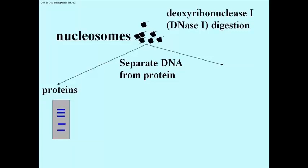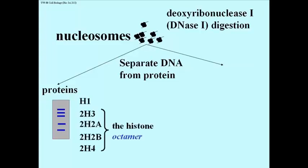It turns out that there are dozens of different proteins at this point. The 10 nm filament is really just made up of DNA and 5 proteins. And these are the histone proteins: H1, H3, H2A, H2B, and H4.